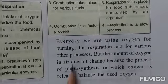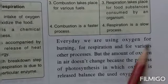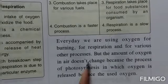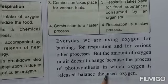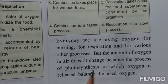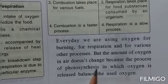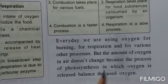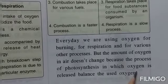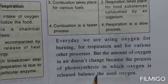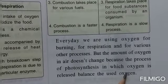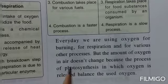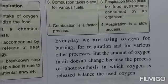Every day we are using oxygen for burning, respiration, and various other processes. But the amount of oxygen in the air is not changing because of the process of photosynthesis. During photosynthesis, green plants make their food in the presence of sunlight, chlorophyll, carbon dioxide, and water, and oxygen is released. Plants continuously take in carbon dioxide and give us back oxygen, while we take in oxygen and give out carbon dioxide. That is why the balance between oxygen and carbon dioxide levels is maintained.